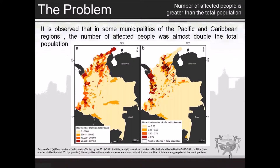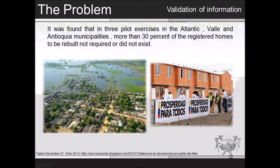The second problem: the number of affected people is greater than the total population. I found an article called The Impact of the 2010–2011 La Niña Phenomenon in Colombia. In their research, they made a map of affected people normalized by the total population and found that 37 municipalities had anomalous normalized values higher than one. The most extreme cases were observed in some municipalities from the Pacific and Caribbean states, where the number of affected individuals was nearly twice the total population. They believe this was a consequence of inaccurate population projection from the 2005 census, or incorrect registration with many individuals registered multiple times.